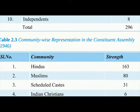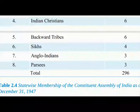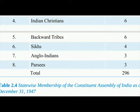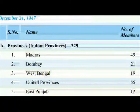Table 2.3 — Community-Wise Representation in the Constituent Assembly, 1946: Hindus: 163, Muslims: 80, Scheduled Castes: 31, Indian Christians: 6, Backward Tribes: 6, Sikhs: 4, Anglo-Indians: 3, Parsis: 3. Total: 296.